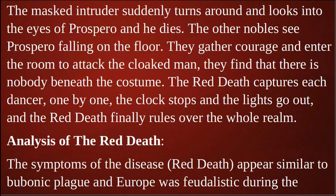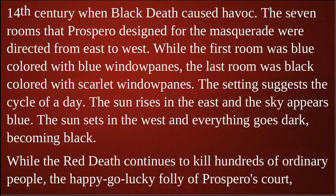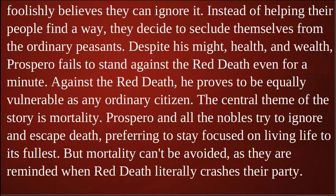In the analysis, the symptoms of the Red Death appear similar to the bubonic plague, and Europe was feudalistic during the 14th century when the Black Death caused havoc. The seven rooms Prospero designed run from east to west — the first blue, the last black with scarlet windowpanes — suggesting the cycle of a day: the sun rises in the east and the sky appears blue; the sun sets in the west and everything goes dark. While the Red Death continues to kill hundreds of ordinary people, the foolish court of Prospero believes they can ignore it. Despite his might, health, and wealth, Prospero fails to stand against the Red Death even for a minute, proving to be equally vulnerable as any ordinary citizen.